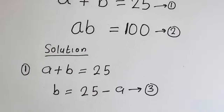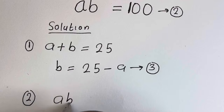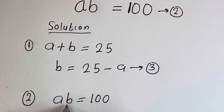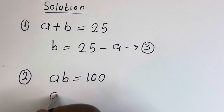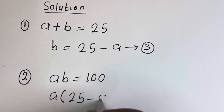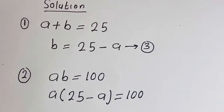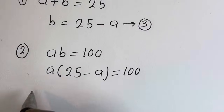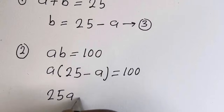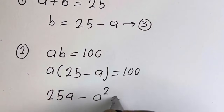Also from equation 2, AB is equal to 100. We can now substitute for B: A multiplied by bracket 25 minus A is equal to 100. Expanding: A multiplied by 25 is 25A, minus A multiplied by A, so A squared is equal to 100.